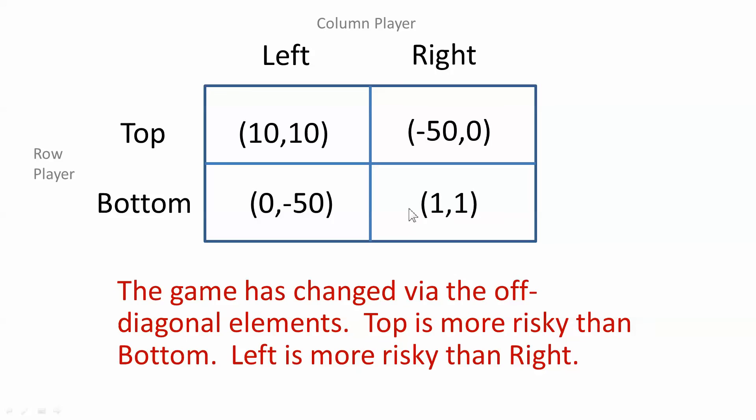Now I've changed the game here by these off diagonal elements. Now there's a possibility of a very bad outcome. So top does give the best possible outcome for the row player, but it also gives the worst possible outcome. And so it's much more risky than bottom, which has a variance in the payoffs not very much. Bottom is safer. Top is risky. Likewise, left is risky. Right is safer.